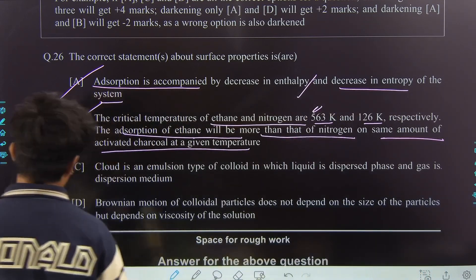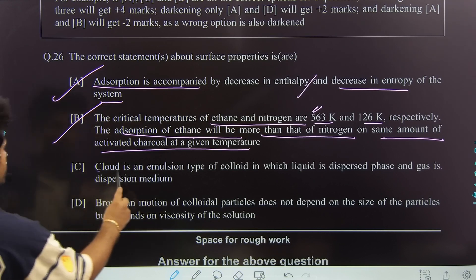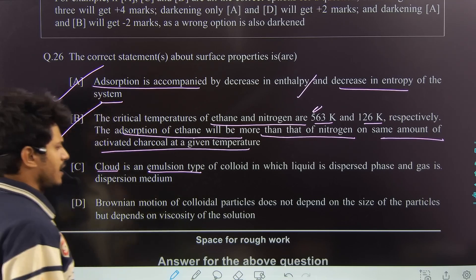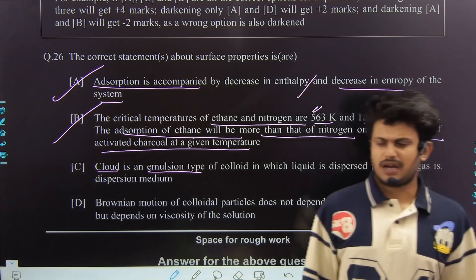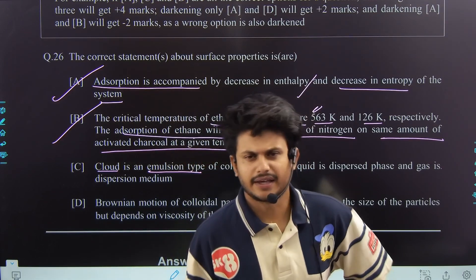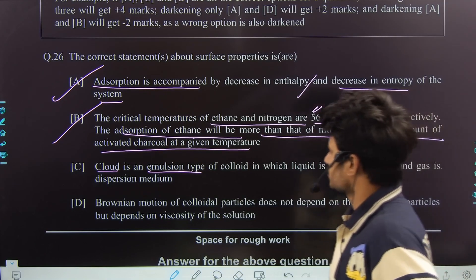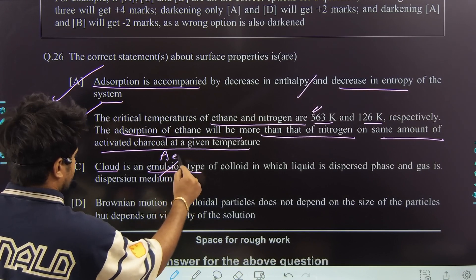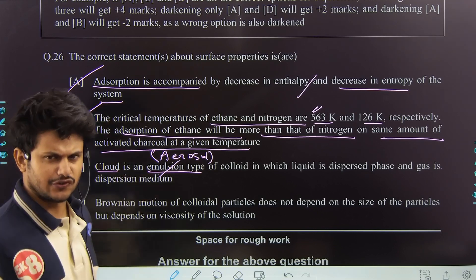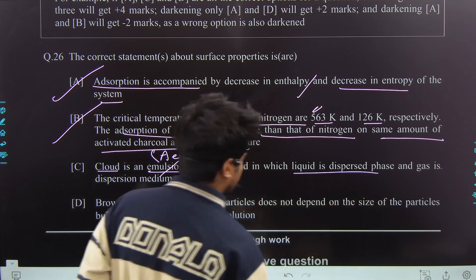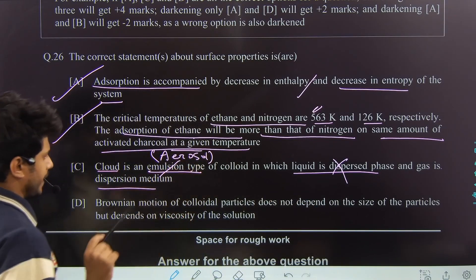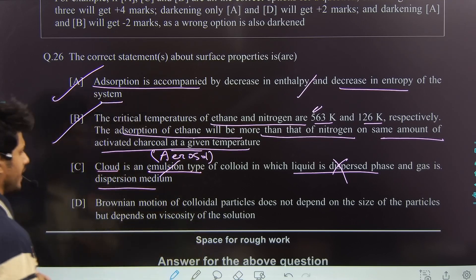Next: is cloud a type of emulsion? No. Cloud does not come under emulsion — it comes under aerosol, where liquid is the dispersed phase and gas is the dispersion medium. This is a direct fact from the NCERT table of classification based on dispersed phase and dispersion medium. So this statement is not true.